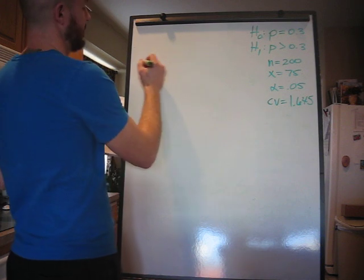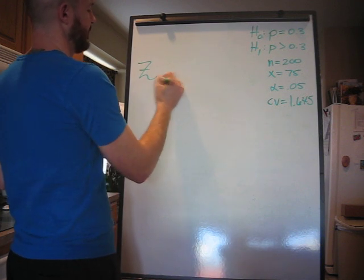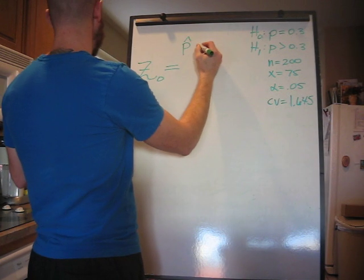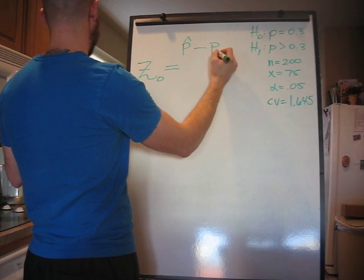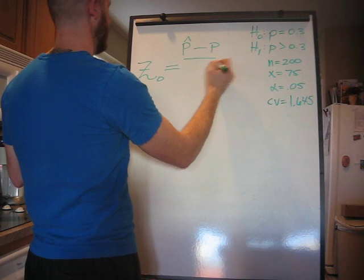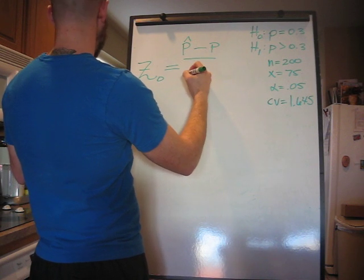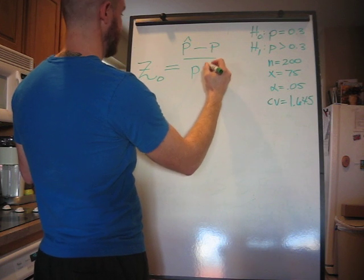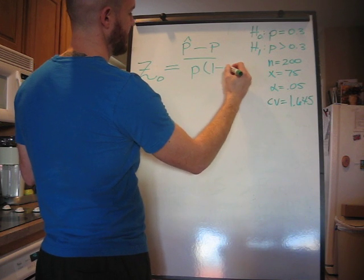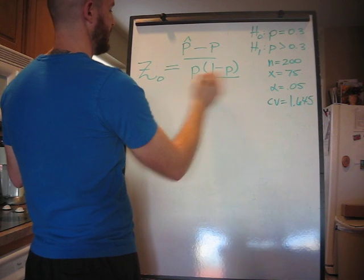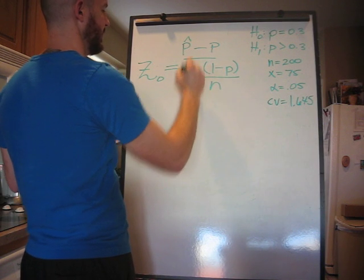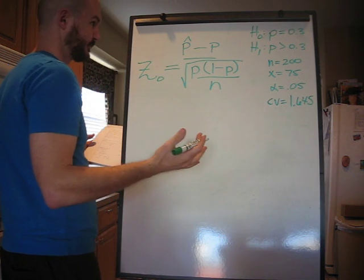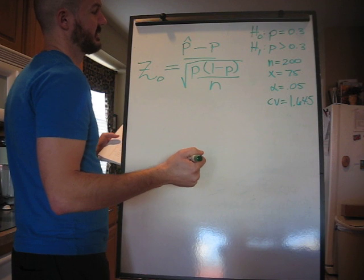Since we're using the Z tables, we're going for Z naught. And the equation is P-hat minus P over square root of P times (1 minus P) over N. And that's actually a square root. So, it's a little tricky.